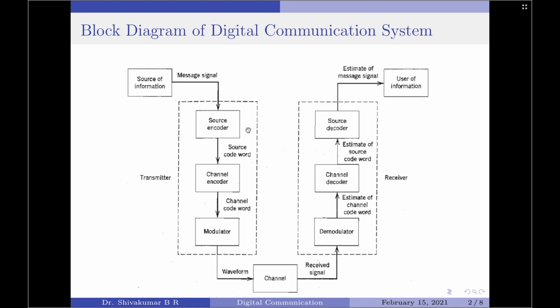Moving on to the channel encoder. In channel coding, the objective is for the encoder to map the incoming digital signal into a channel input and for the decoder to map the channel output into an output digital signal in such a way that the effect of channel noise is minimized.